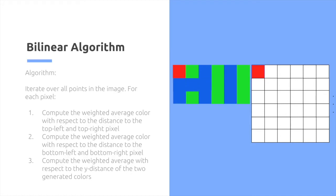So for each pixel, we first compute the weighted average color with respect to the distance to the top left and top right pixel. And we do the same for the bottom left and bottom right pixel. Lastly, we compute the weighted average with respect to the y distance between the two generated colors.